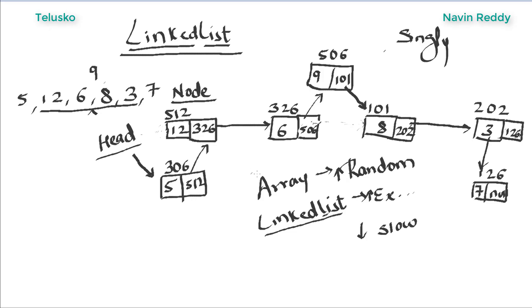Linked list is slow compared to arrays when searching. If you want to fetch a value like 8, you cannot go directly — you have to traverse from the head, going through 5, then 12, following the sequence to reach 8. We also have the concept of Big O notation — for linked list search, it is O(N), meaning it is time-consuming compared to arrays in terms of searching. However, if you want to insert a value in between, linked list is the best option.